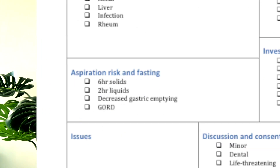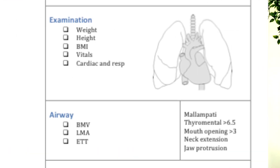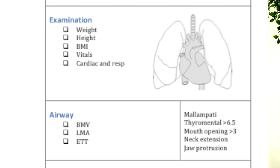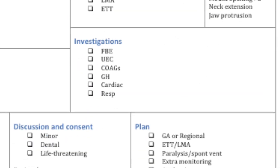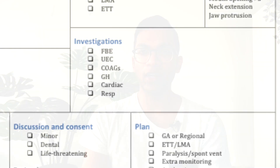I then assess aspiration risk by asking about the length of fasting for solid foods and liquids, and also about any disease states that might decrease gastric emptying. I then examine the patient — in healthy patients this often means auscultating the chest to assess heart sounds and lung fields, and then doing an airway assessment. We'll go through this in more detail in future videos.